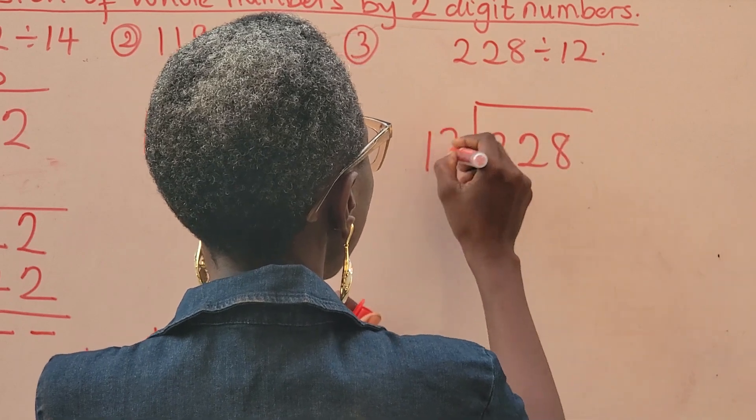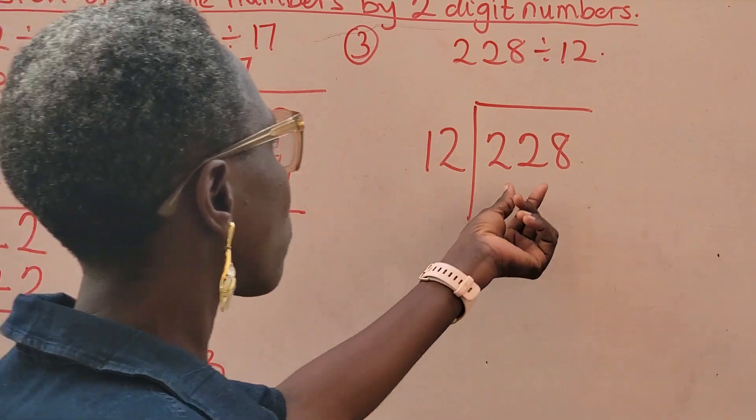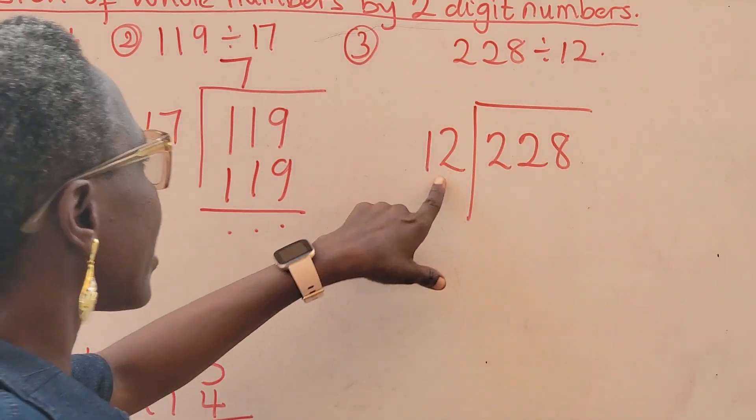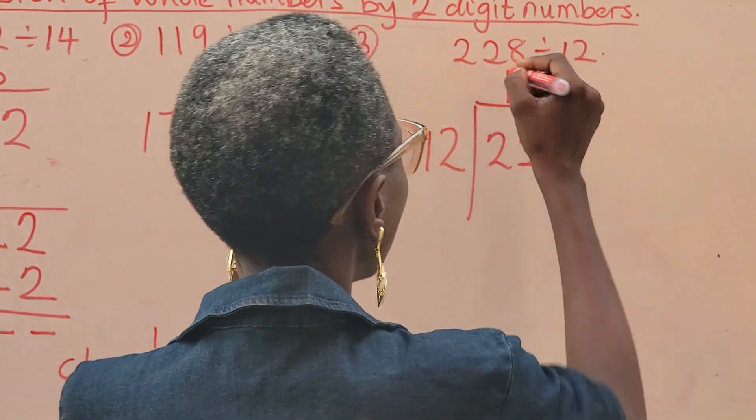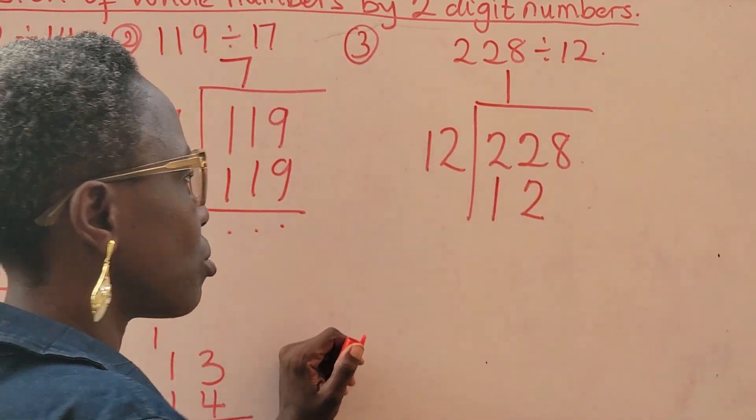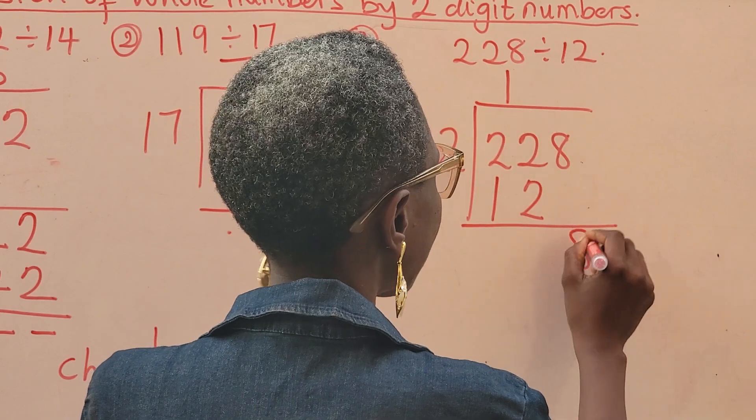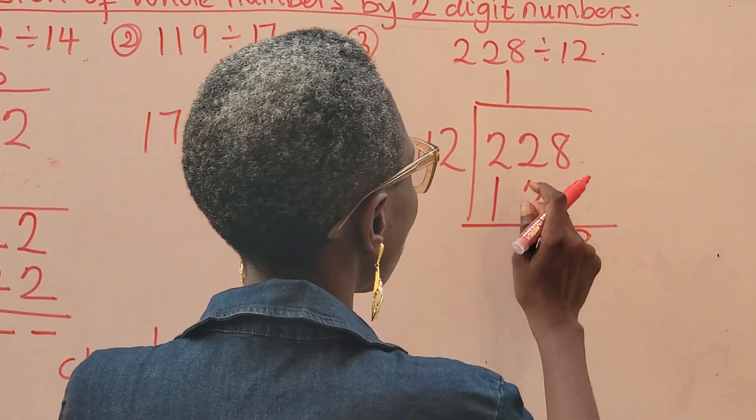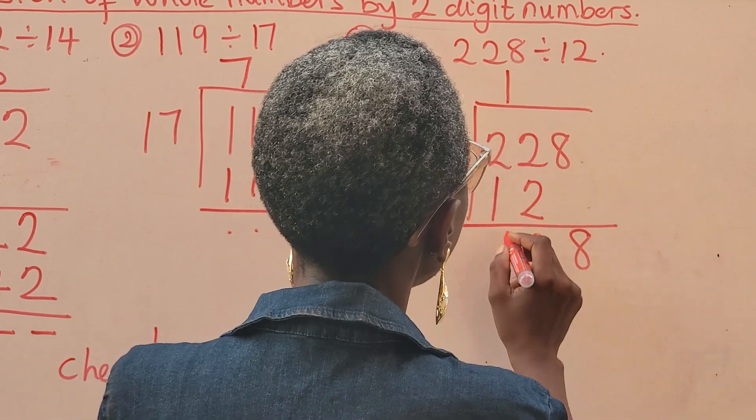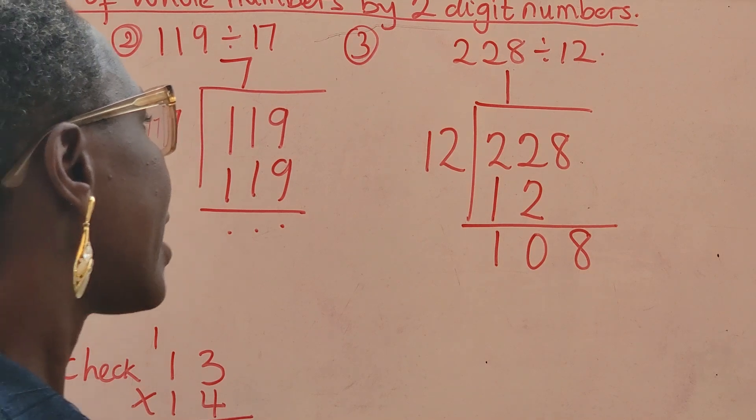228 divided by 12. Now, on this particular one, we have 22. It can actually divide 12. So 22 divided by 12 is 1. 12 times 1. Write your 12 under the 22. Then you take away. 8 take away nothing. 8. 2 take away 2 is 0. 2 take away 1 is 10. So we have 108. Then we divide again.